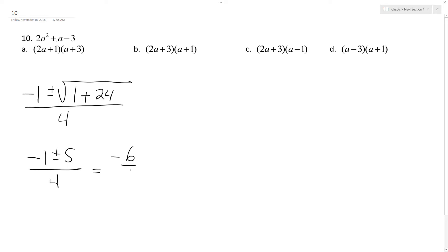We get negative 6 over 4, and we get plus 4, so that would be 1. So this means you're going to have a 2A plus 3, because of the negative.